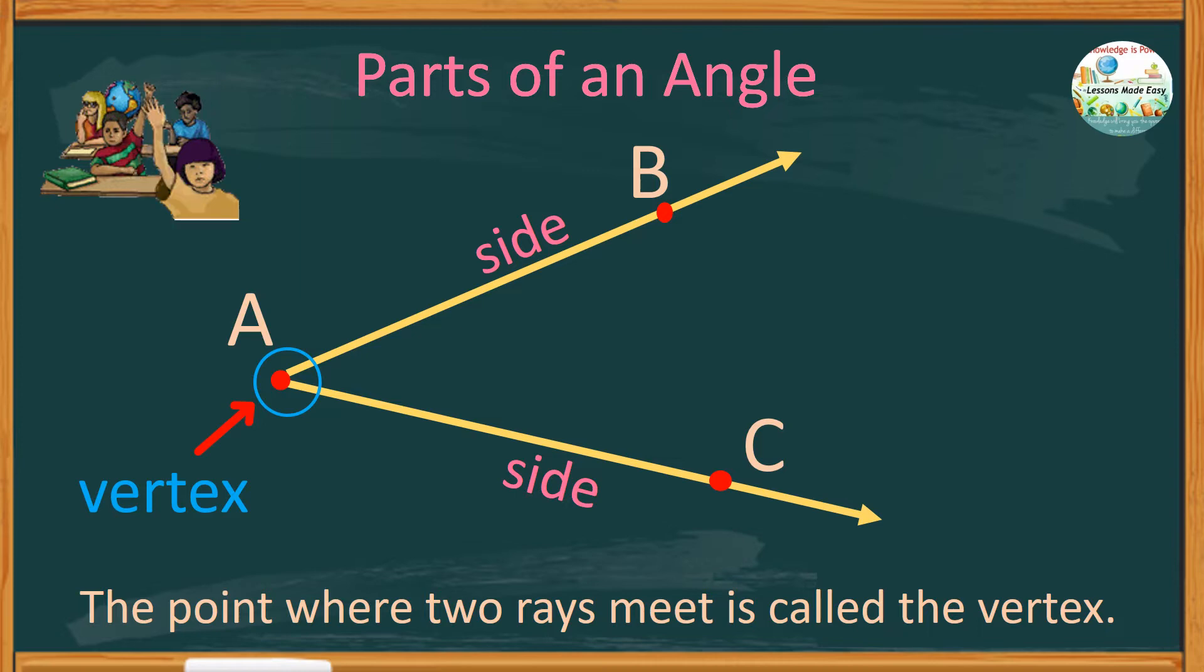We can name this angle as angle BAC or angle CAB. The letter in the middle is always the vertex. A vertex is a special point, and for that reason, an angle can also be named by its vertex. Therefore, in this example, the angle can also be named as angle A.